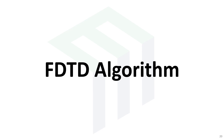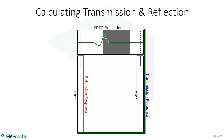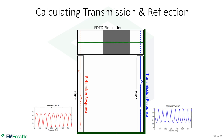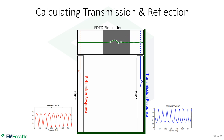FDTD algorithm. One thing we haven't discussed is how we actually calculate transmission and reflection. By exciting our device with a pulse and recording the reflected and transmitted responses, we're recording an impulse response. Fourier transforming the impulse response gives the frequency response — and that's exactly what we do. We can even run Fourier transforms in real time during the simulation so we don't have to store a large array. In concept: we record impulse responses and Fourier transform to get reflectance and transmittance.